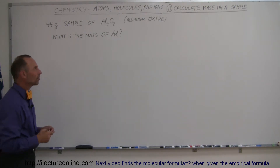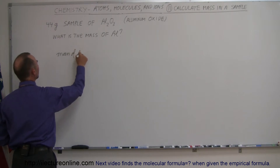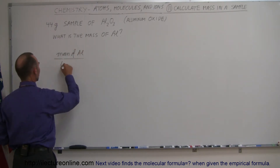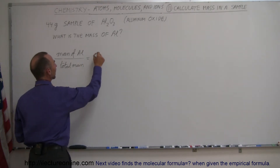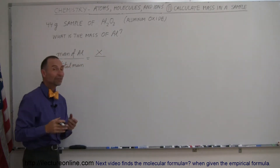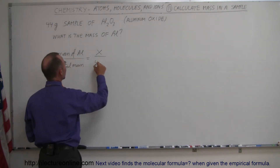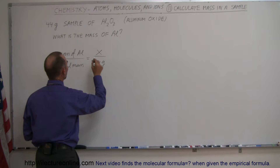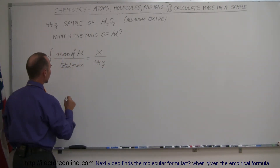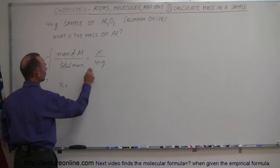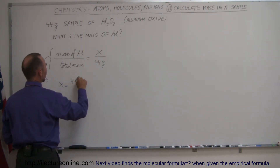The way to approach that is to say that the mass of the aluminum divided by the total mass of the sample — we can represent that as X being the unknown. Let X represent the amount of mass the aluminum has, and the total mass would be the 44 grams. What we're going to do with this ratio is solve for X.